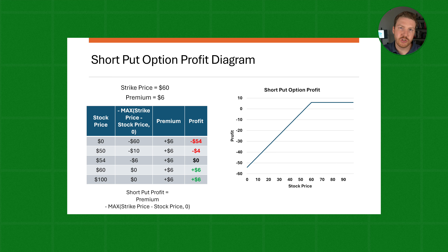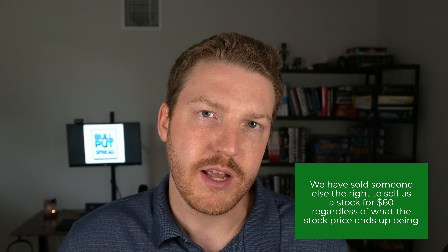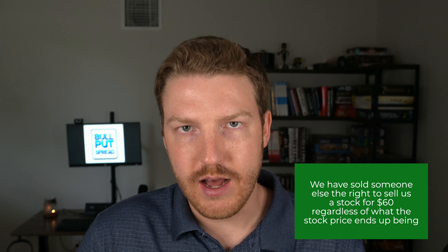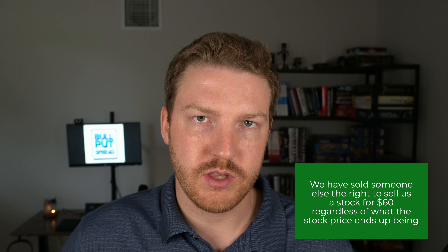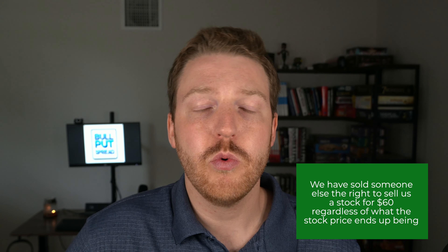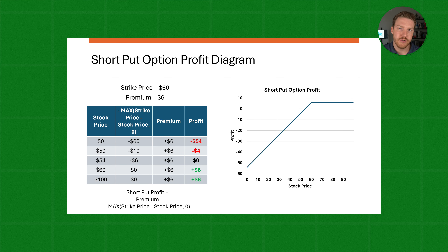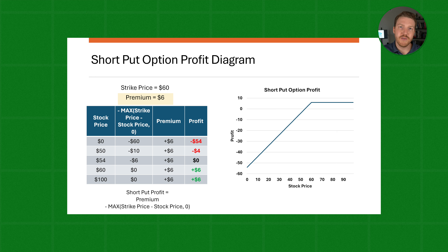If we are feeling bullish, we might short or sell a put option with a strike price of $60. This means that we have sold someone else the right to sell us a stock for $60, regardless of what the stock price actually ends up being. So we would be more inclined to take on this position if we thought that the stock price was going to rise, or at the very least not fall. But we're exposed to a tremendous amount of risk should the actual stock price fall substantially.